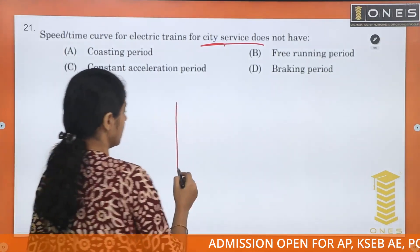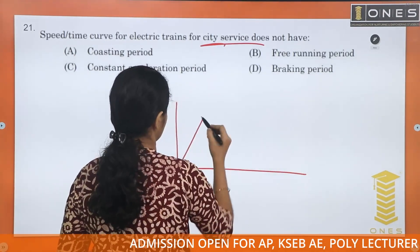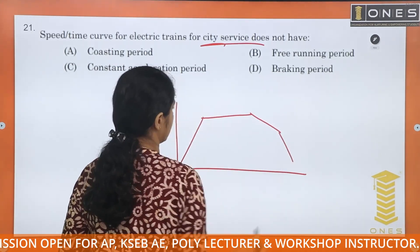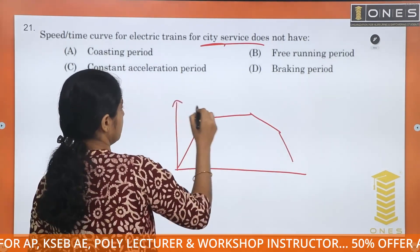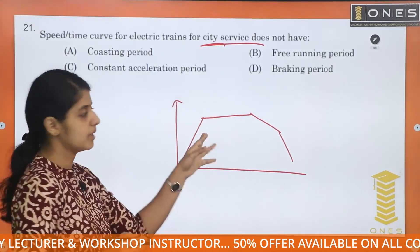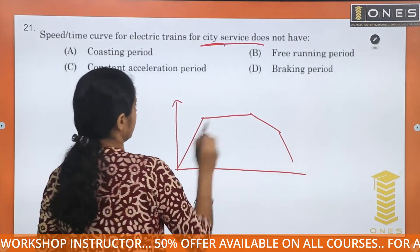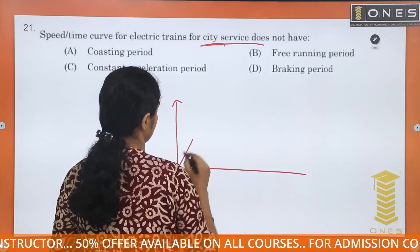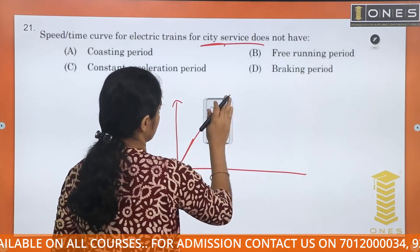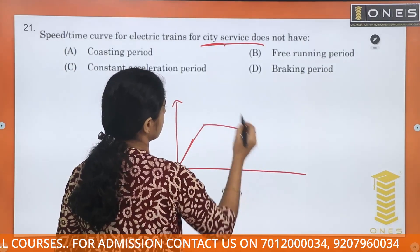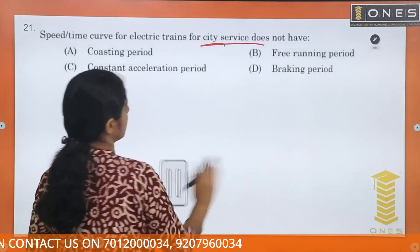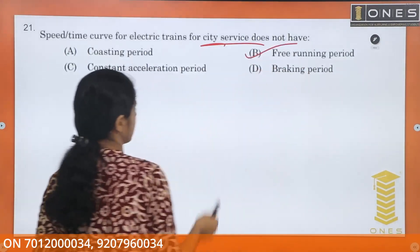There is acceleration, free running, coasting, and braking. This is the main line service, where there is a greater distance between stops. When we have a city service, the free running period is much shorter compared to main line service.